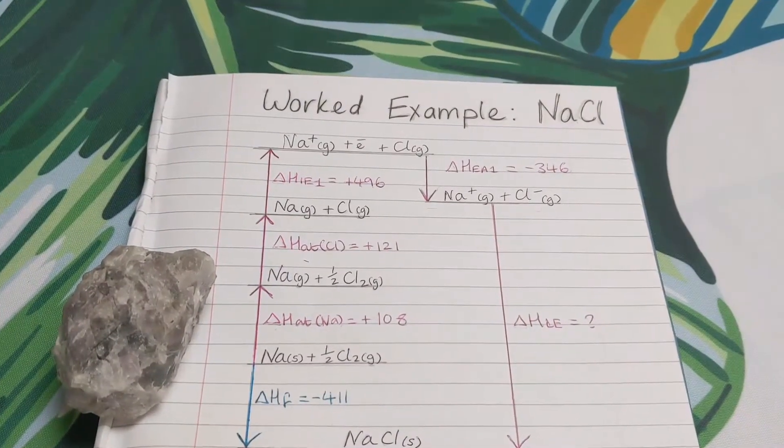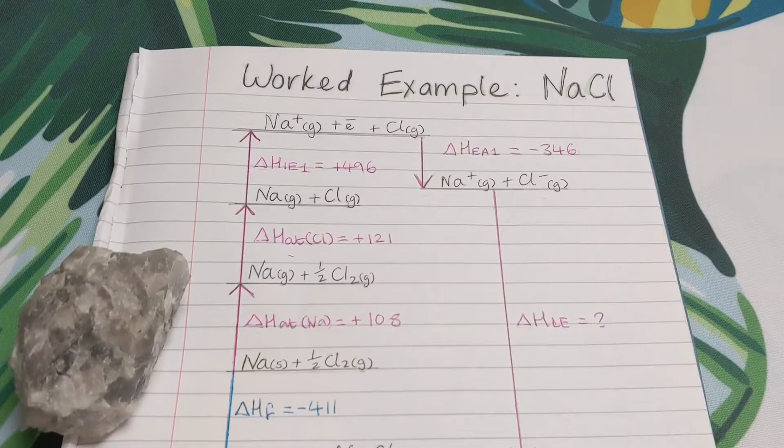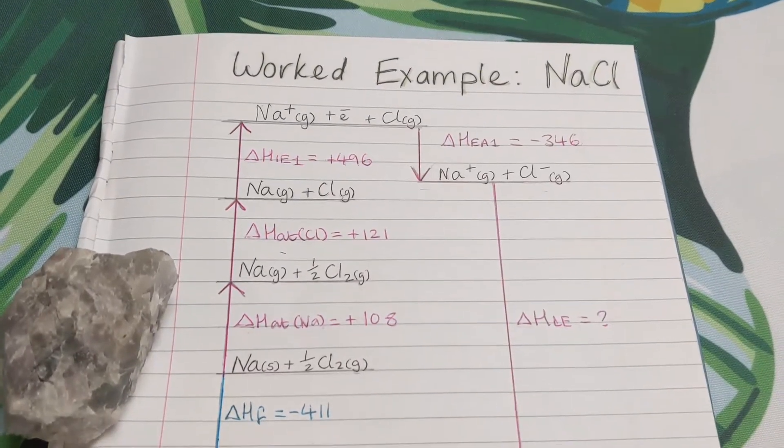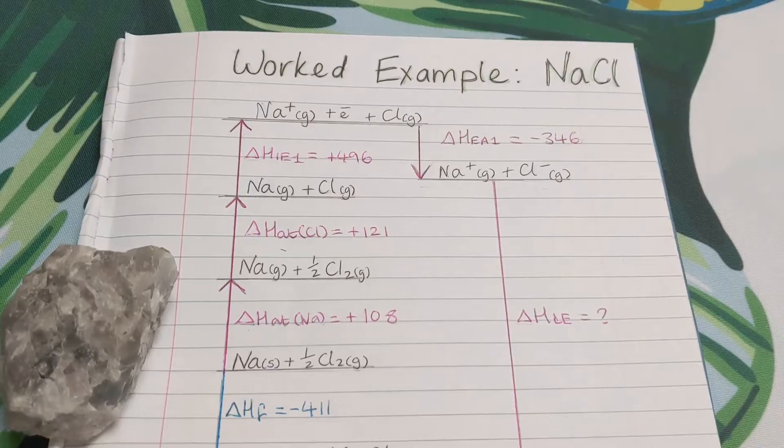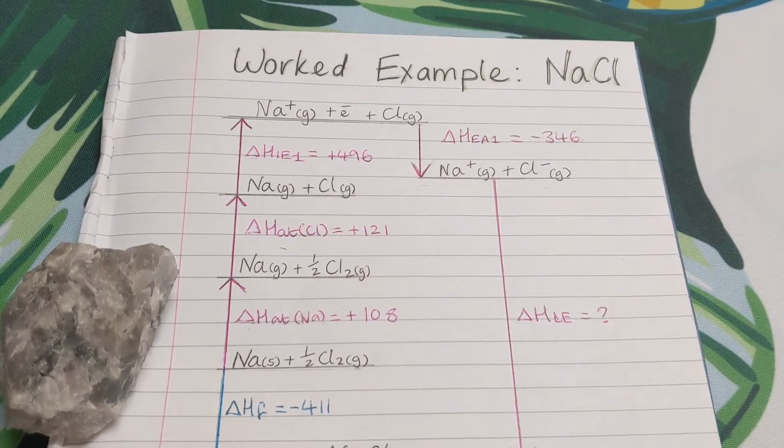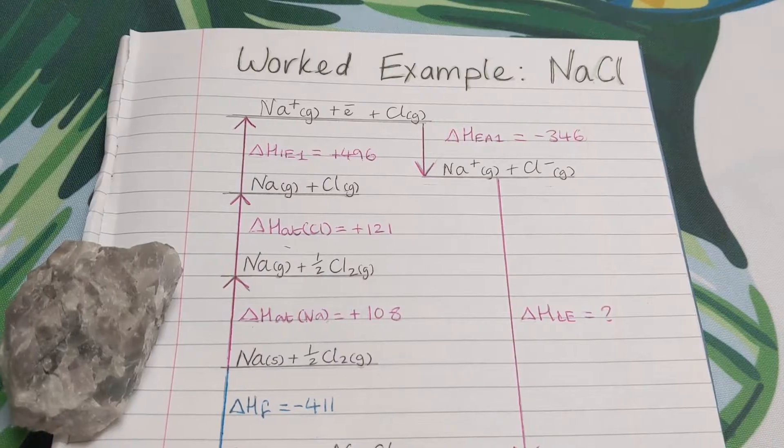Hi everyone, welcome to PhysChem with Liz. Today we're going to look at how to construct a full Born-Haber cycle for a simple 1 plus 1 minus ionic compound, sodium chloride.